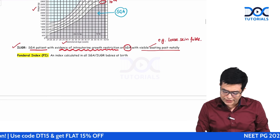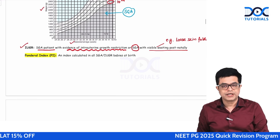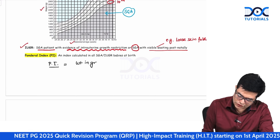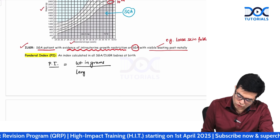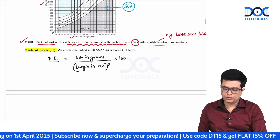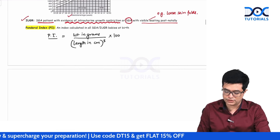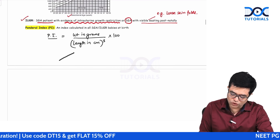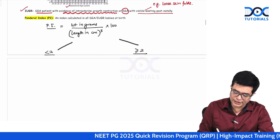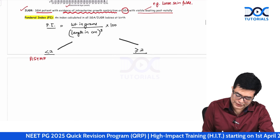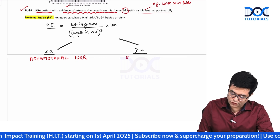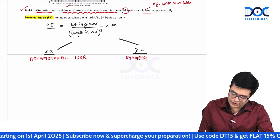What is ponderal index? It is calculated often in IUGR and SGA babies. The formula is: weight in grams divided by the cube of length in centimeters, multiplied by 100. If the ponderal index is less than 2, the baby is called asymmetrical SGA or asymmetrical IUGR. If it is equal to or more than 2, the baby is called symmetrical IUGR.